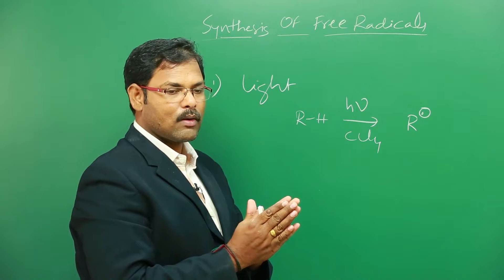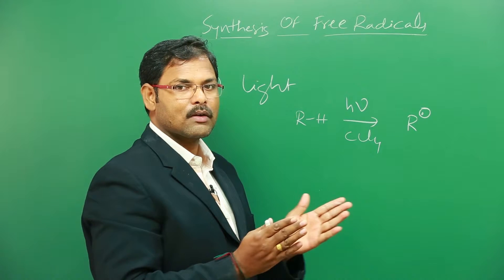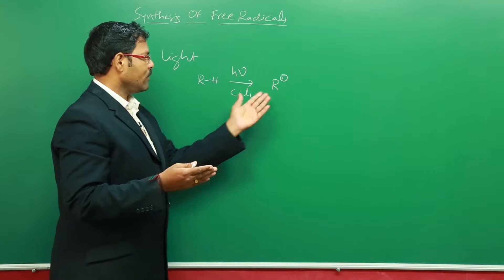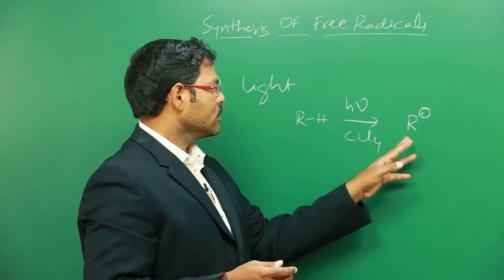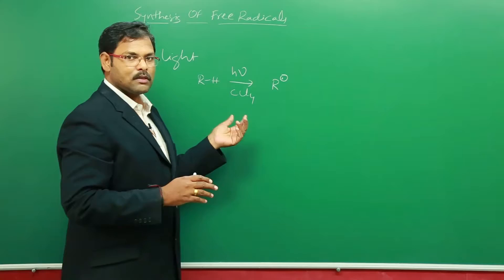Every atom will have its own electron, they will be apart, thereby a free radical is generated. This is the way how primarily free radicals are generated.